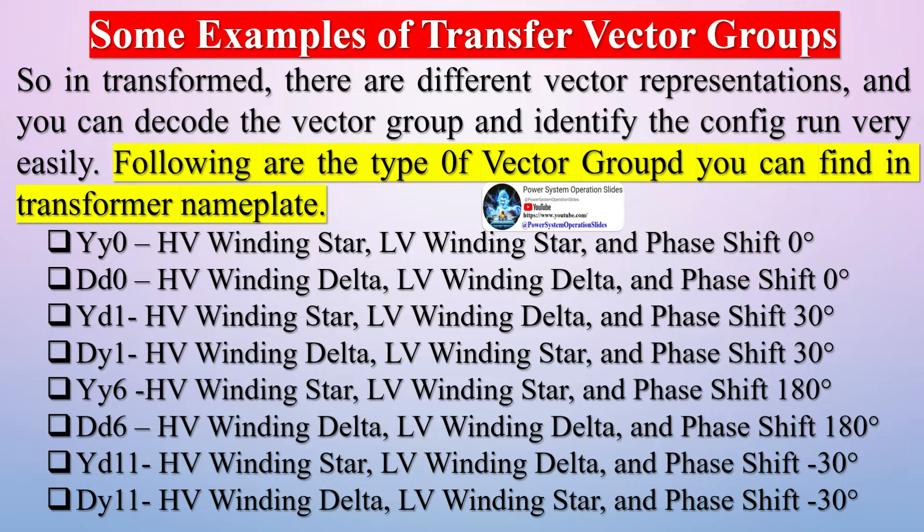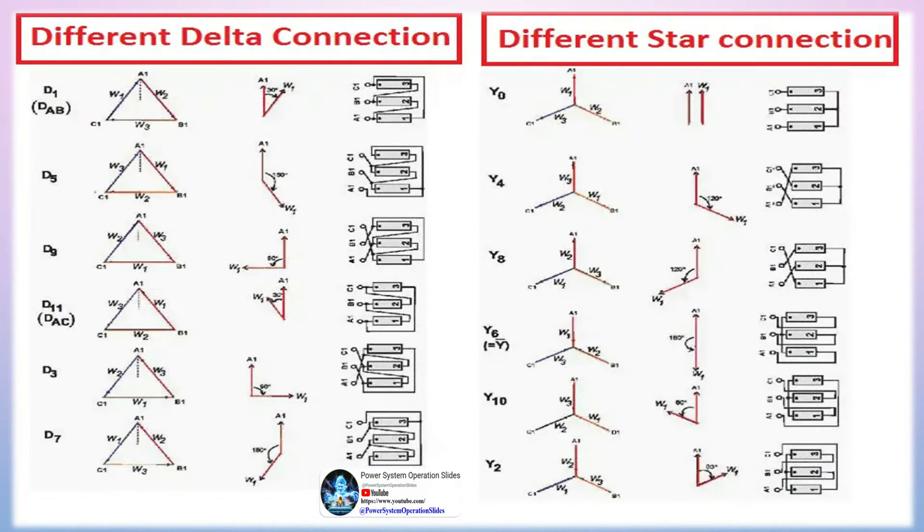The phase windings of a polyphase transformer can be connected internally in different configurations, depending on what characteristics are needed from the transformer. In a three-phase power system, it may be necessary to connect a three-wire system to a four-wire system, or vice versa. Because of this, transformers are manufactured with a variety of winding configurations to meet these requirements.